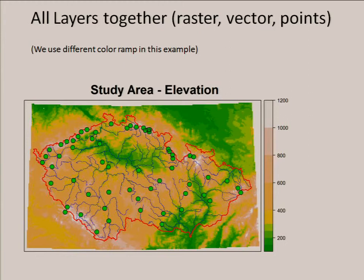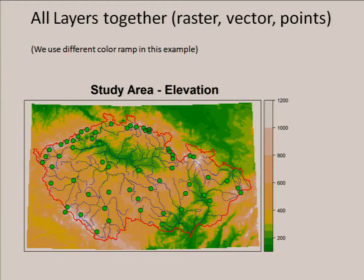The next example shows all the different data types displayed together in R. We have the raster, which is the elevation grid. We have the vector, which is the borders and major rivers. And we have the points — also vector — which are the observation locations.